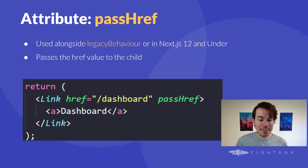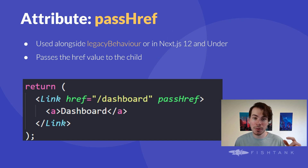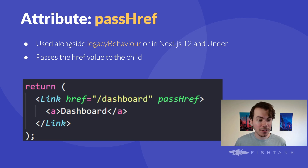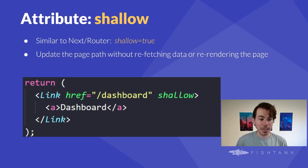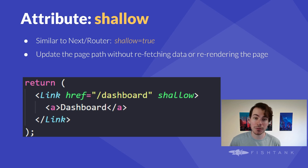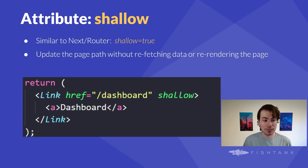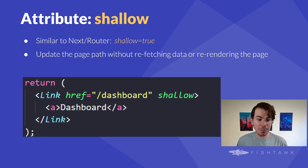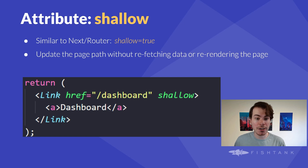passHref is used mainly in the legacy Next.js Link component. It forces the link component to send the href property to its child — in this example, we pass the link into the anchor tag. This is mainly used in the legacy Next.js Link component, which we will cover more very soon. Shallow is another great property, also available within the Next router, and something I use all the time when developing complex forms. It allows you to update the path of the current page without re-running getStaticProps, getServerSideProps, or getInitialProps — particularly beneficial when you want to change only part of the state or URL query parameters without refetching or re-rendering the entire page.